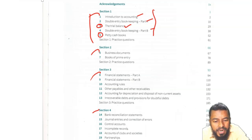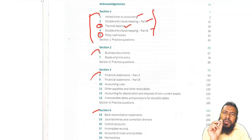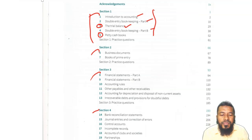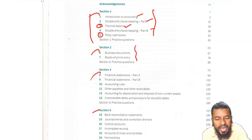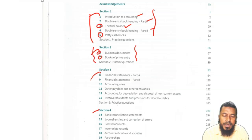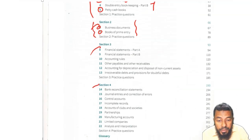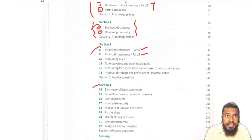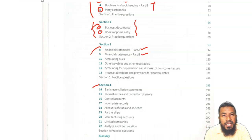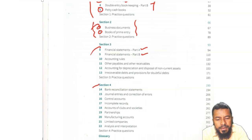Business Documents and Books of Primary Entry are really simple chapters. You don't need any long, vast videos, but I have it in mind to do them, especially on past papers. Financial Statements A and B — Income Statement, Balance Sheet, Statement of Financial Position, and Statement of Comprehensive Income. I have a couple of videos on those, although covering A-level content, so you can check those out.